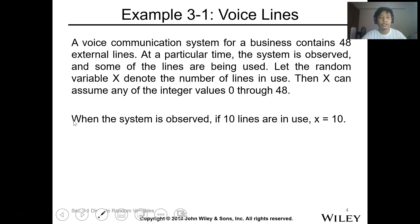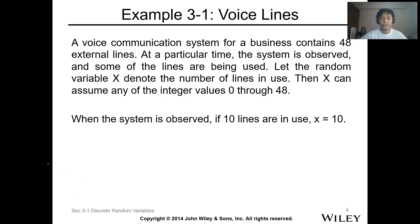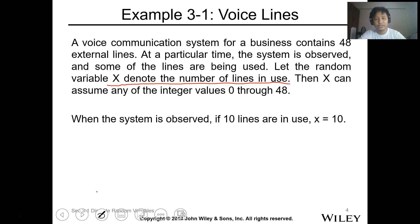Let's have this example. A voice communication system for a business contains 48 external lines. At a particular time, the system is observed and some of the lines are being used. So at any given time, you check how many of the lines are being used. Let the random variable X denote the number of lines being used at the given time of observation.